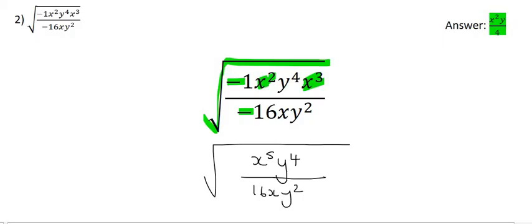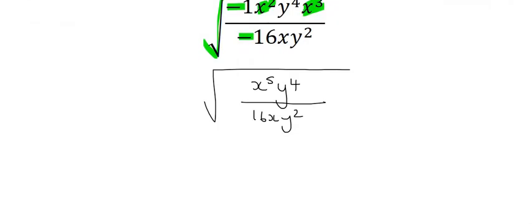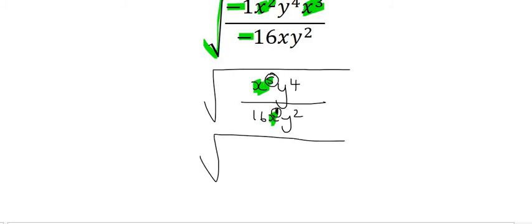At the bottom, we're still going to have 16xy^2. Notice we've taken away the negatives because they cancelled each other out. At the top we have x^5, and at the bottom we just have x, which has an exponent of 1. So what do we do with these exponents? We minus them. 5 minus 1 is 4, so we have x^4. And this y^4 and y^2, we minus the exponents to get y^2.